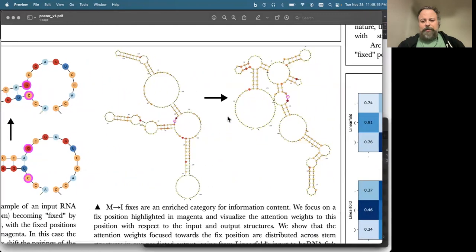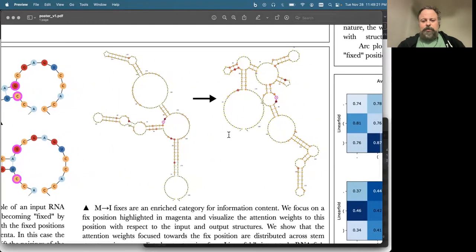Here's a more complex example where the structure is radically altered in the corrected version, but what we're doing is we're visualizing through a heat map, color coding on each nucleotide, where the attention is coming from to this fixed position right here. This position, it's an example of a nucleotide that changes classification status from being in a multi-loop to being an internal loop.